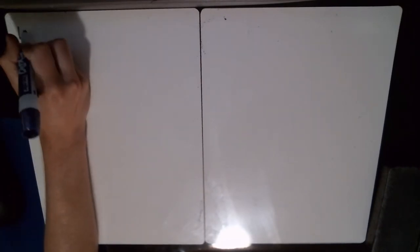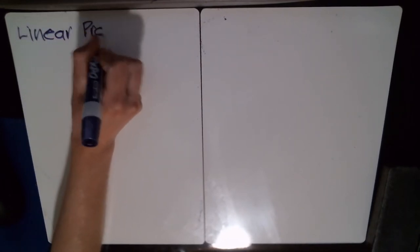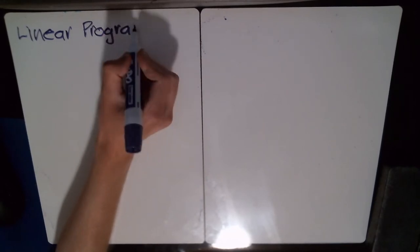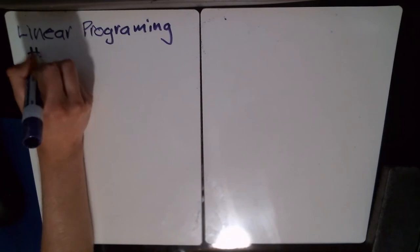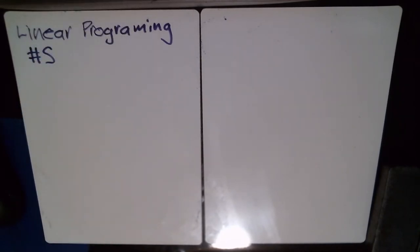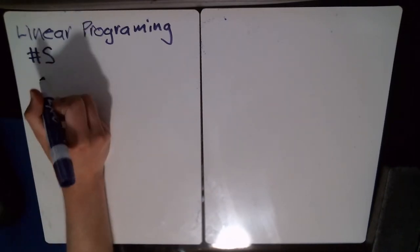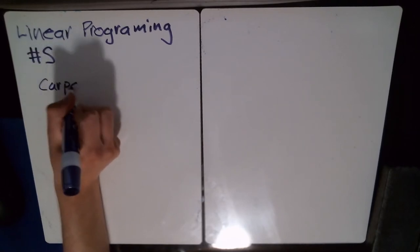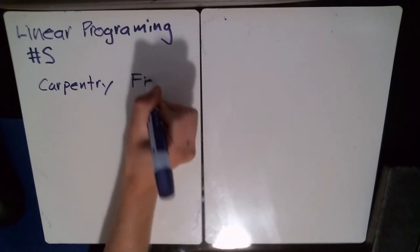Welcome back to another video. In this video, I'm going to look at a linear programming story problem — number five on page 486. It's talking about furniture. A furniture manufacturer makes wooden tables and chairs. The production process involves two basic types of labor: carpentry and finishing.